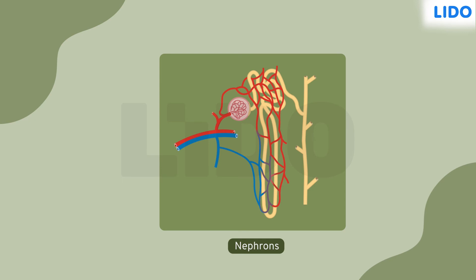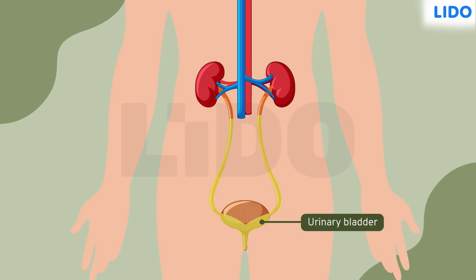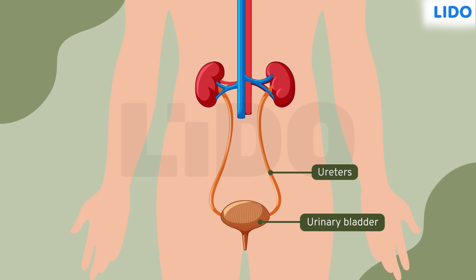The renal pelvis finally collects the urine and passes it to the urinary bladder through the ureters. Normally, in an adult human body, 1.5 litres of urine is produced each day.